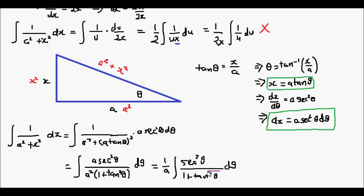Well here's a good trick. This 1 plus tan squared θ from trigonometric identities is equal to sec squared θ. So we can rewrite as 1 over a times the integral of sec squared θ divided by sec squared θ dθ. And these will cancel out to be equal to 1. So we'll end up with 1 over a times the integral of 1 dθ.